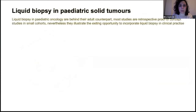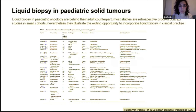Liquid biopsy in pediatric oncology is behind its adult counterpart, and most studies performed to date are retrospective proof-of-concept studies in small cohorts. Nevertheless, they illustrate exciting opportunities to incorporate liquid biopsy into clinical practice. Studies have been published in neuroblastoma, Ewing sarcoma, diffuse midline gliomas, and others, applying different methodologies such as droplet digital PCR, qPCR, or NGS to detect copy number alterations and hotspot mutations.